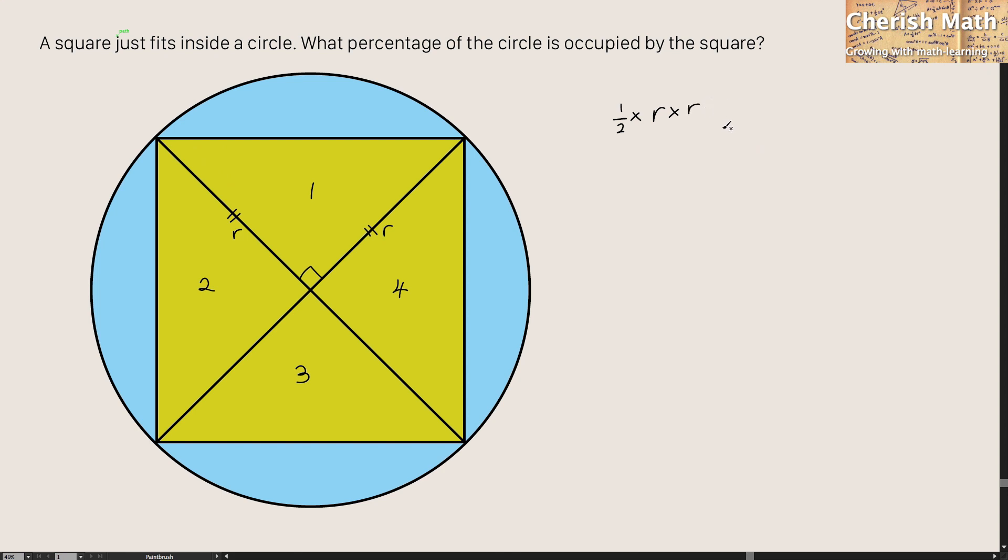And if I want to work out the entire square which is consisting of four triangles, I will have to multiply by 4. And the answer that I'm going to get here is in fact 2R square.